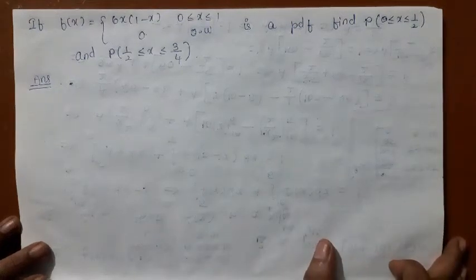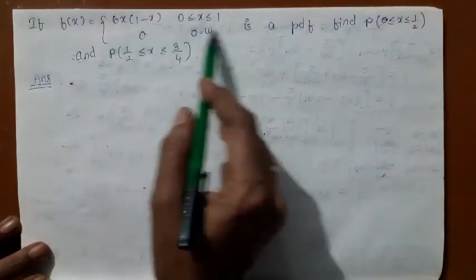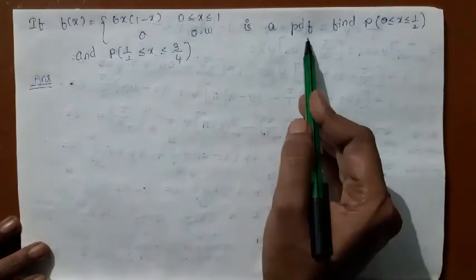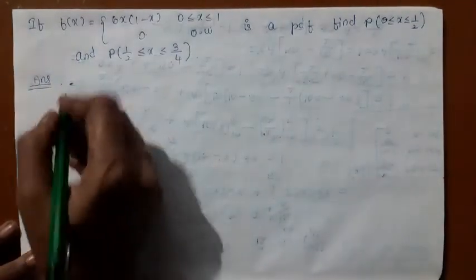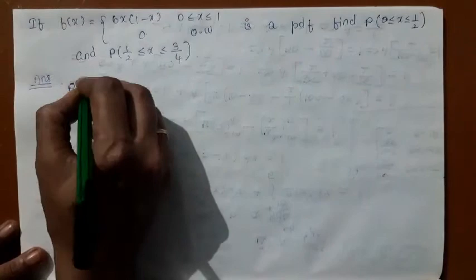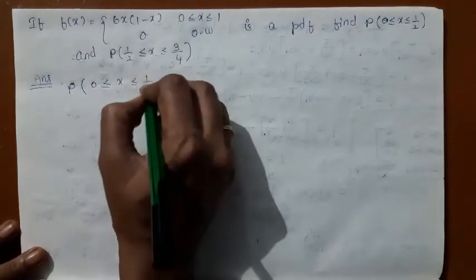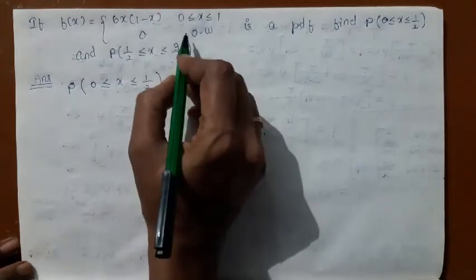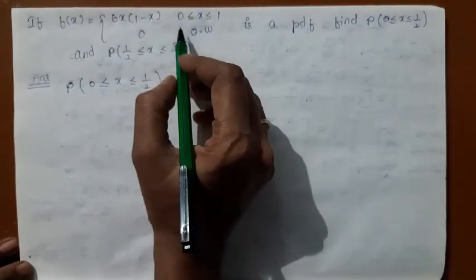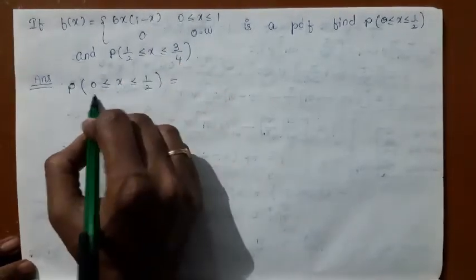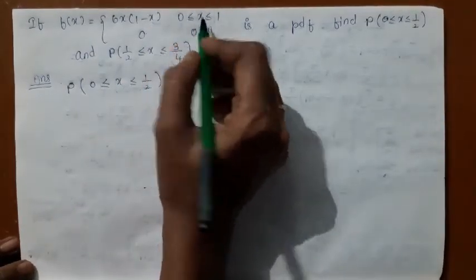Let us consider this problem in which a PDF is given. If f(x) = 6x(1 - x) in the range [0,1] is a PDF, find the probabilities. For the first question: what is the probability that x lies between 0 and 1/2? For the entire range 0 to 1, f(x) is this. The interval 0 to 1/2 lies within this range.